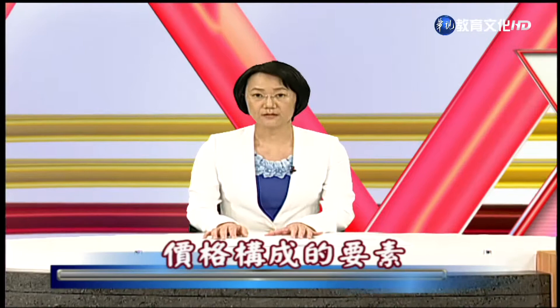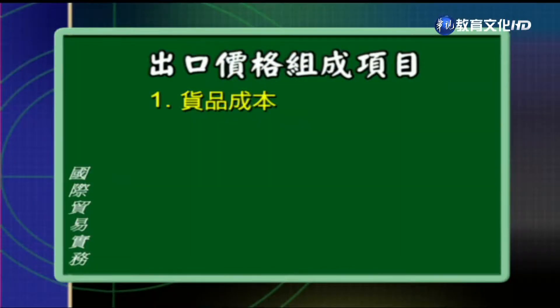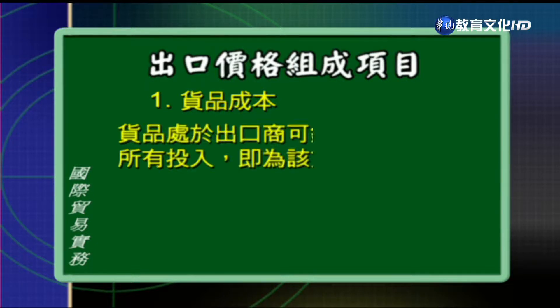首先我们来看价格构成的要素有哪些。不管是进口或者是出口，价格的组成项目主要包括三项：第一项是成本，第二个是费用，第三个部分就是利润了。我们先来看出口价格的组成成分。第一个货品成本，它是指货品处于出口商可以销售状况之前所有的投入，也就是货品的成本。